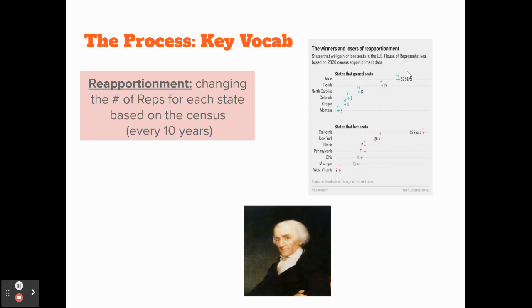If you look at the chart on the screen, Texas, Florida, North Carolina, Colorado, Oregon, and Montana each gained at least one seat — at least one representative. Because we're giving extra reps to those states and the total is frozen at 435, we have to take an equal number of seats from states that lost population.